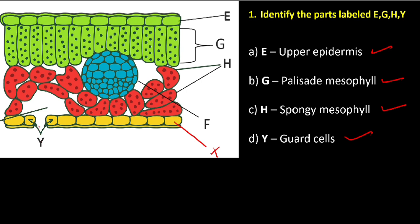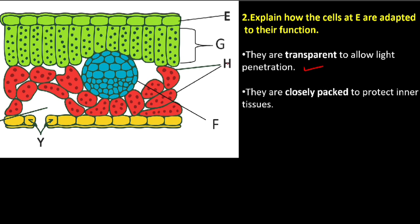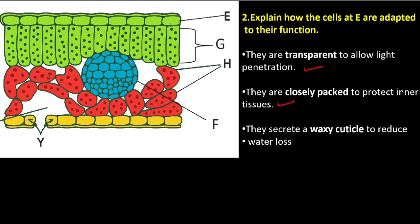Question number two: explain how the cells at E — the upper epidermis — are adapted to their function. First, they are transparent to allow light penetration into the photosynthetic cells. Another adaptation is that they are closely packed to protect inner tissues. Also, the upper epidermis secretes a waxy cuticle to reduce water loss.